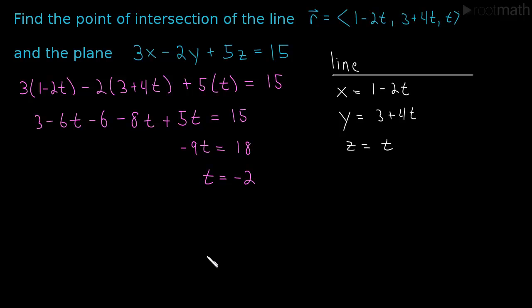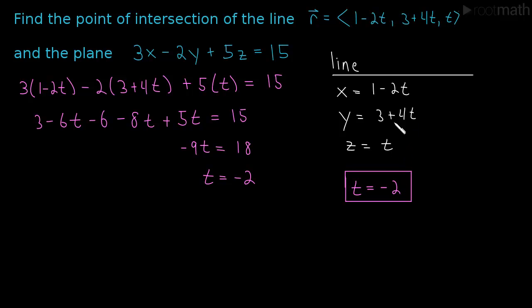What did we figure out? We were looking for a point of intersection, and we ended up with t equals minus 2. That's not a point itself — it's a t value. But it tells us how to find the point. When we plug any t value into the parametric equations, we get a point on the line. This particular t value gives the point on the line that is also a point in the plane.